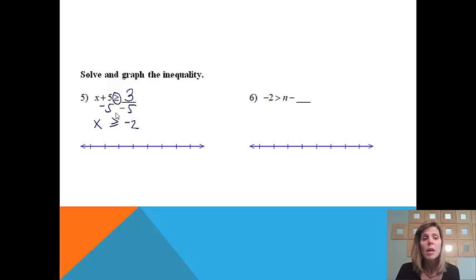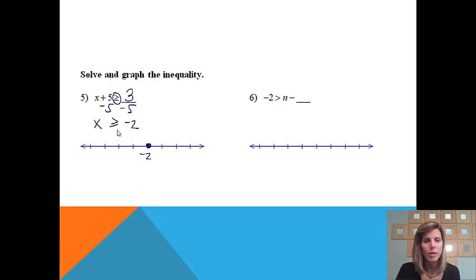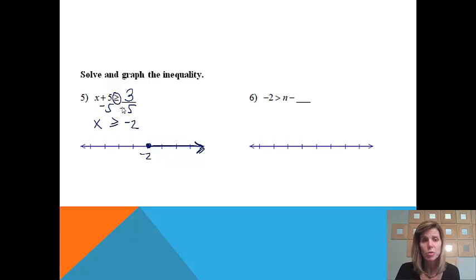We have now solved it, but there's more than one answer, so we graph it to show all the answers that actually work. We're going to start with negative 2. There is an equal sign, so we close in the circle. It says greater than, so all the numbers greater than negative 2 are to the right. You can check your arrows and notice that they match. Very similar to solving a normal equation.